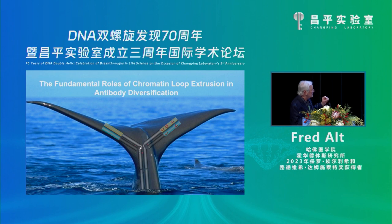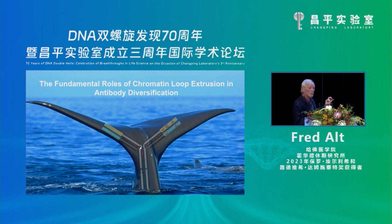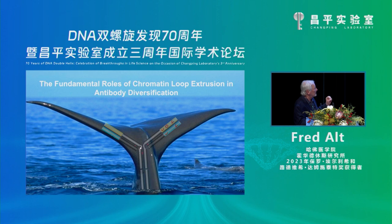The N-terminal portion is the variable region of antibodies. For the heavy chain, they're encoded by V, D, and J segments, which were assembled during lymphocyte development to make a very highly diverse set of heavy chain repertoires. Light chains are assembled by just V and J segments.